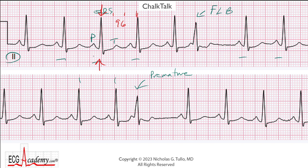What about the PR interval? Look at this beat. Notice that the QRS complex starts on this line right here. We can see the P wave starts around this line right here — four little boxes, so that's 160 milliseconds.